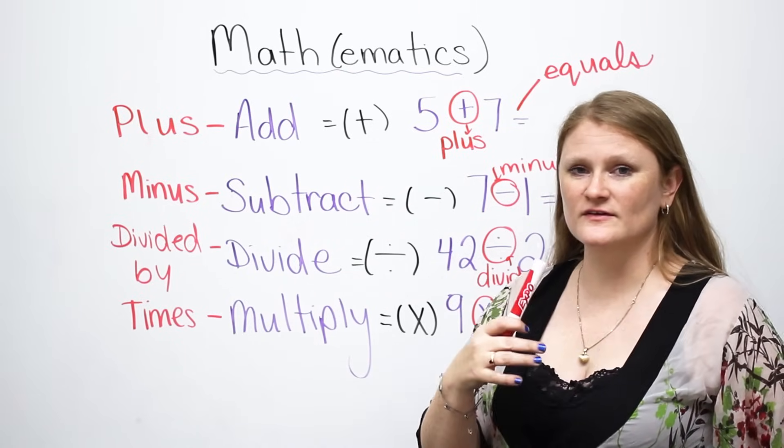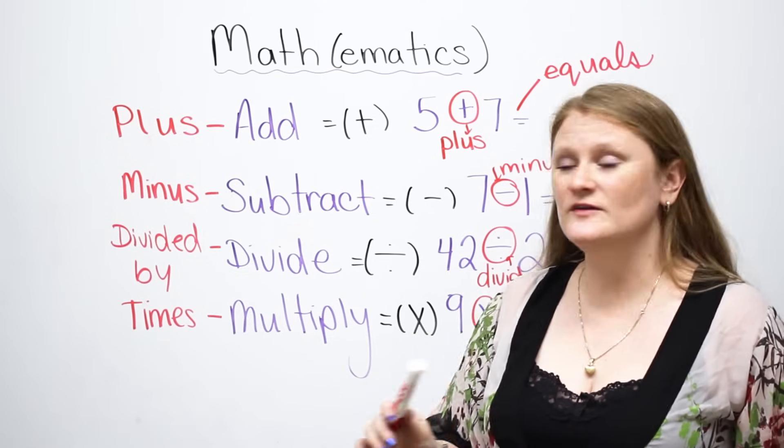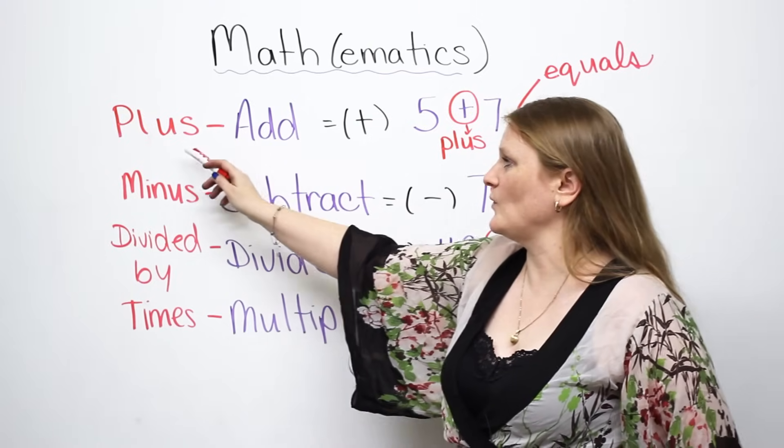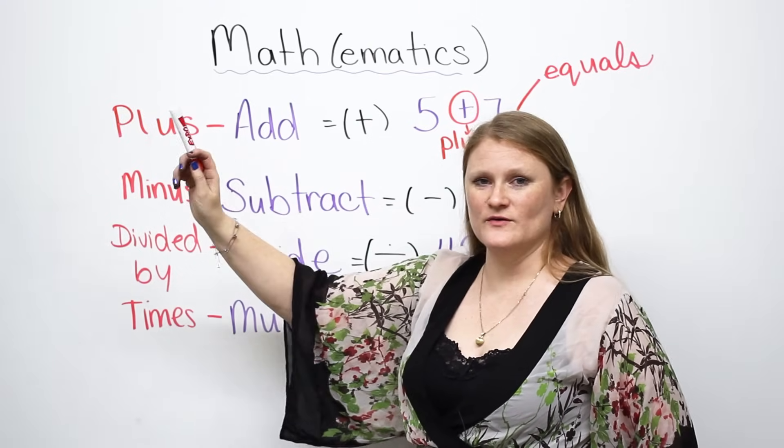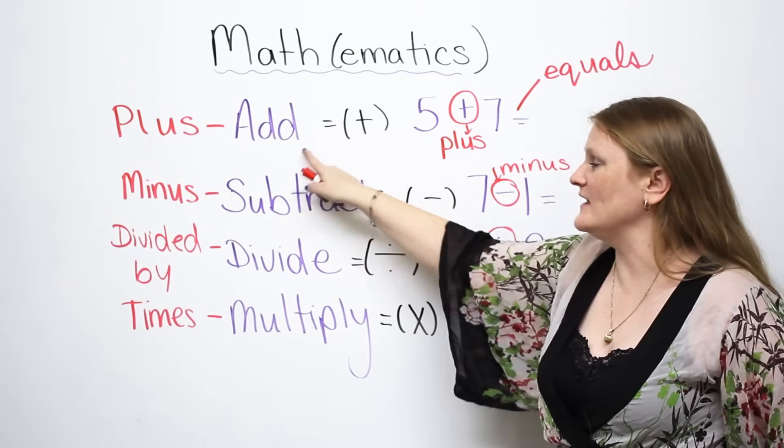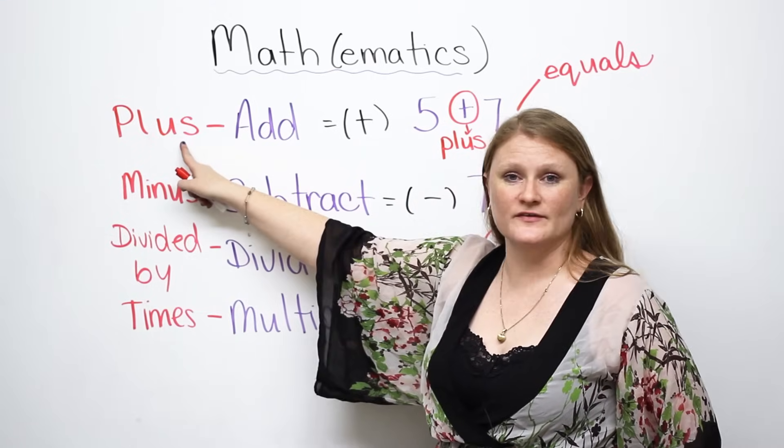However, when we actually speak about math in a sentence in English, we don't use these words, we use these red words. So, instead of saying, for example, five add seven, we say five plus seven.